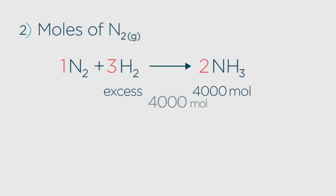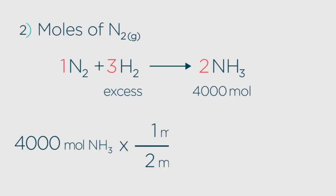Well, you simply have to divide the 4,000 by the molar ratio, which is two. So the answer is 2,000 moles of nitrogen. Did you get that one?